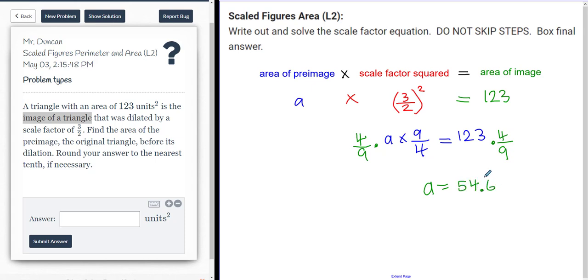So 54 point, it looks like it's going to be 0.6 repeating. Let's see what the instruction had said. Round your answer to the nearest tenth. So I actually didn't get enough decimals. So I'm going to put 54.66 and it's going to go forever.